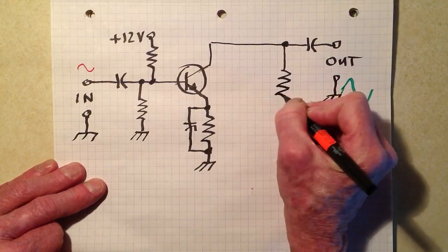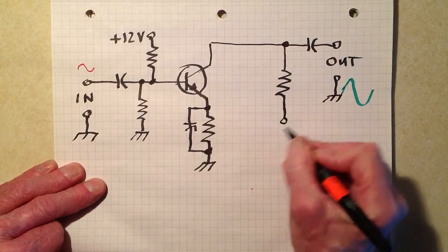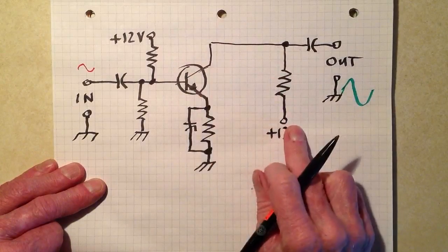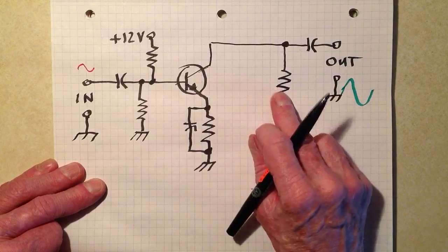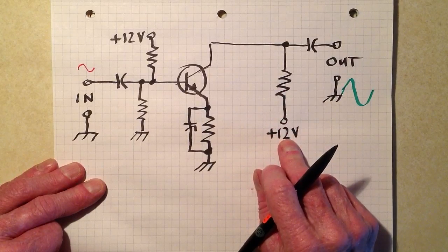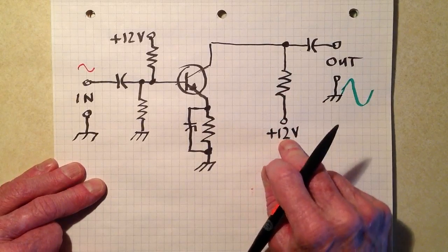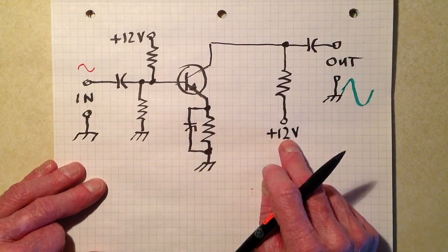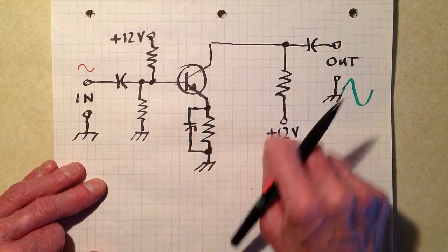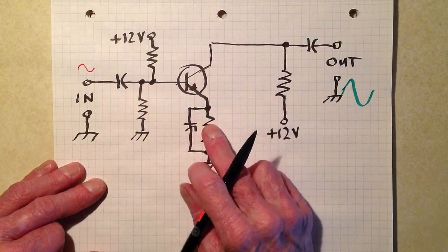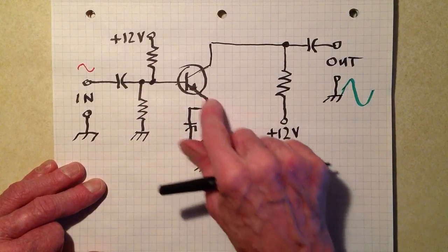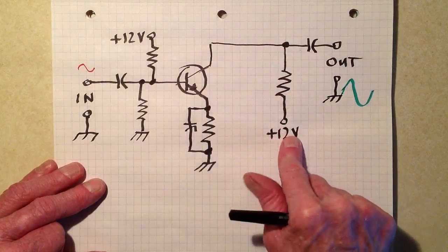So what we do is connect the positive 12 volts, or whatever the power supply voltage happens to be, 9, 12, 15 volts, sometimes upwards of 20 volts, sometimes only maybe 3 or 6 volts, depends on the device. Anyway, we have then current flowing through the transistor all the time.